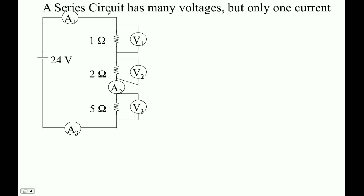So the key concept here is that a series circuit has many voltages, but it has only one current. All of these ammeters here are going to have the same current, and that's going to be the current that goes this way. That's the same current here. And once we figure out that one current, it'll be the same for all of these ammeters.